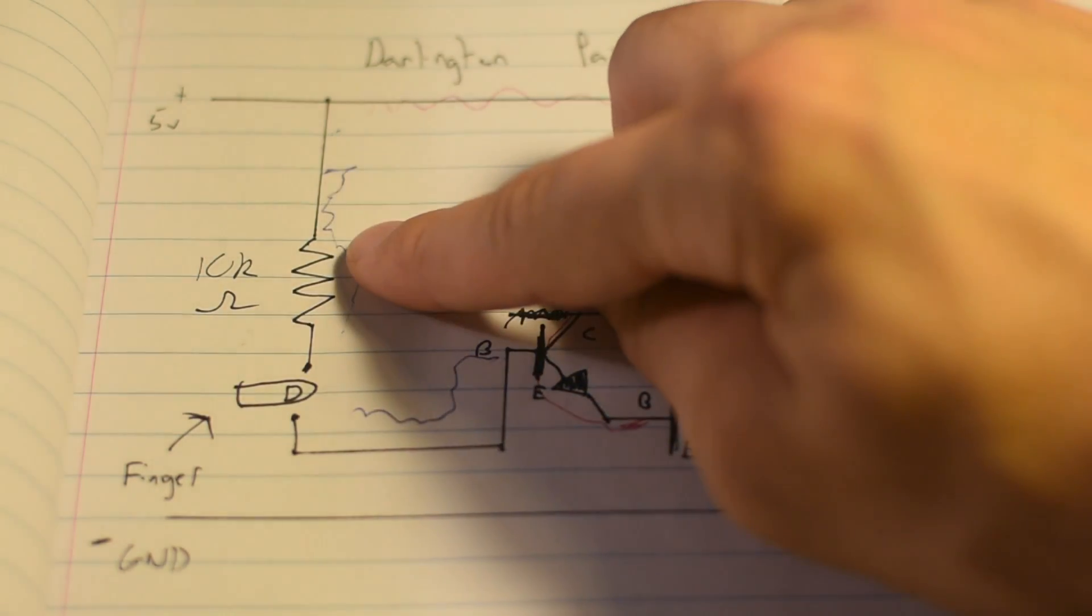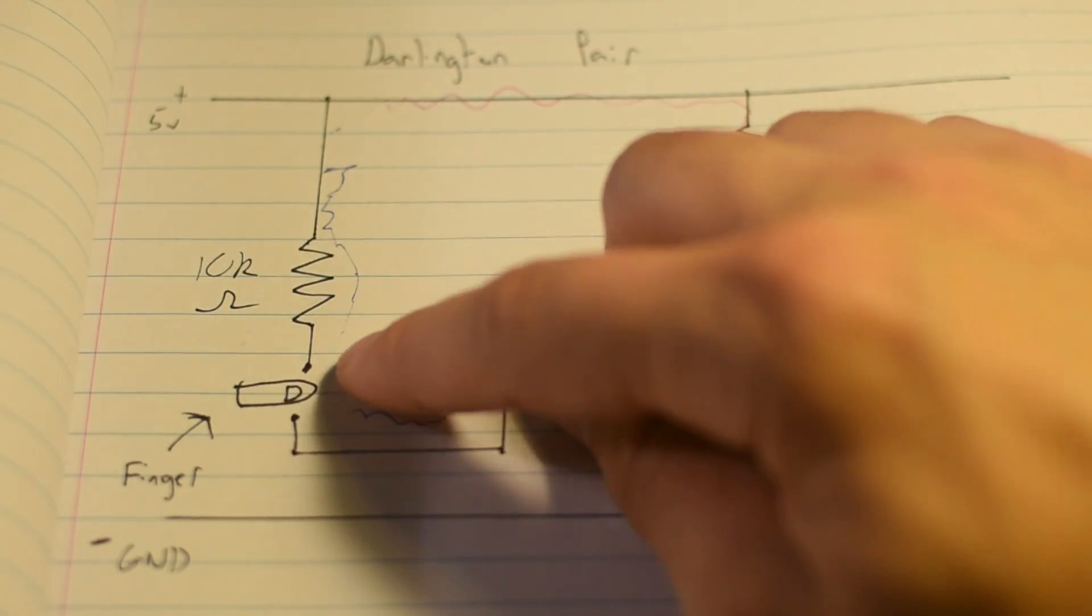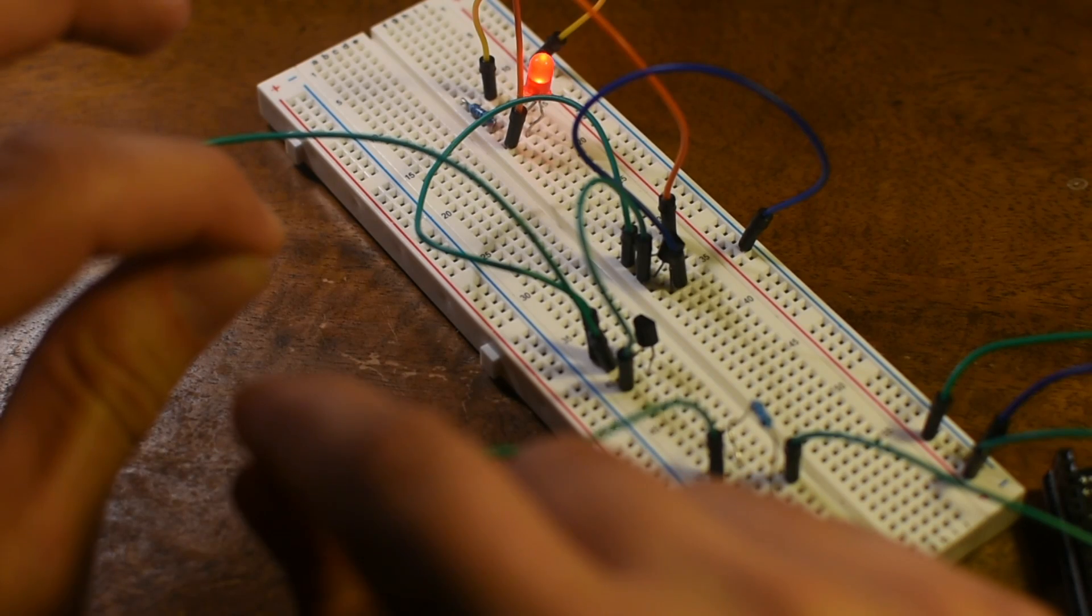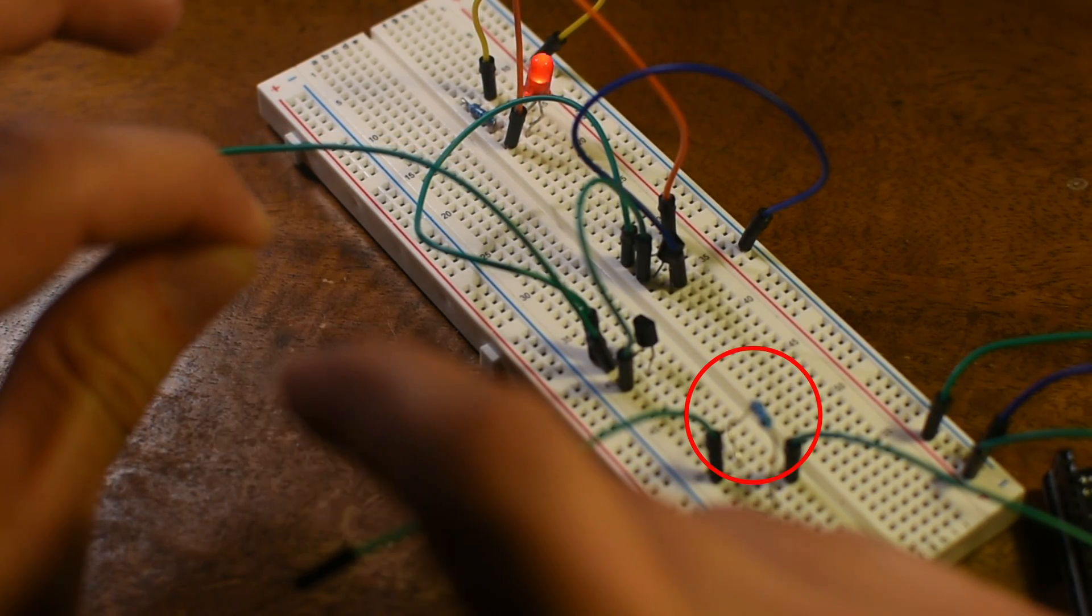So our second wire is coming off our 5 volt rail here. And this is where we have the part of our circuit where we touch the two leads and we can turn the light on. We've also added a 10 kilo ohm resistor to reduce the current even further.